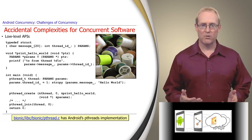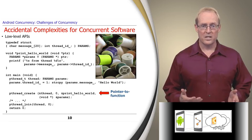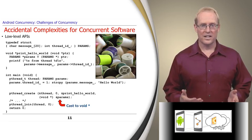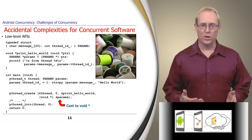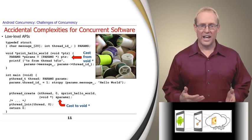First, it uses low-level and error-prone data types such as pointers to functions that are passed when a pthread is created. Likewise, typecasts are needed to pass a data structure as a void pointer when a thread is created, as well as to cast the void pointer back to whatever structure is used to pass data between the caller and the callee in the pthreads environment.